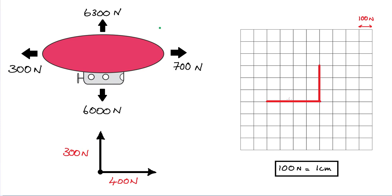The resultant force acting on the airship is the combination of these two vectors: the horizontal vector of 400 newtons to the right, followed by the vertical vector of 300 newtons upwards. The overall resultant force acting on the airship is the combination of these two vectors — let's represent that in green. That is the resulting vector.